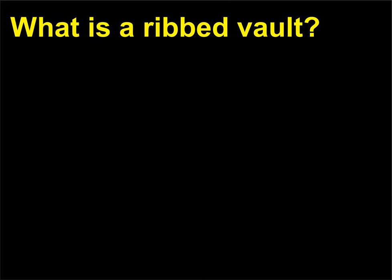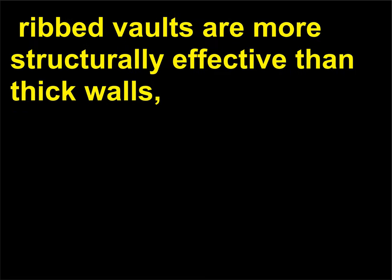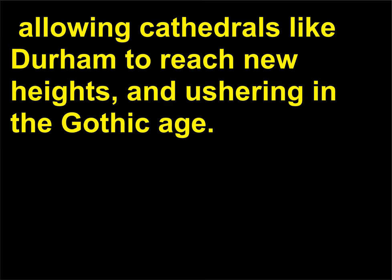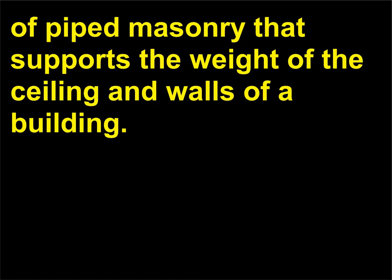What is a ribbed vault? Unlike the rounded barrel vaults so closely associated with the Romanesque style, ribbed vaults are more structurally effective than thick walls, allowing cathedrals like Durham to reach new heights and ushering in the Gothic age. Looking much like the human ribs, a ribbed vault is composed of a fanning framework of pipe masonry that supports the weight of the ceiling and walls of a building.